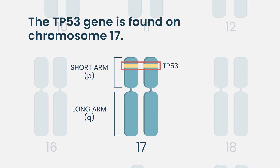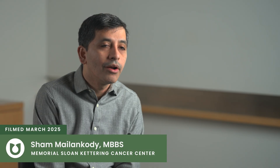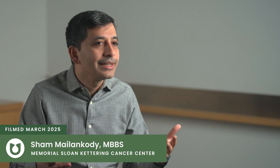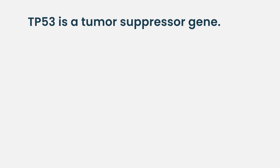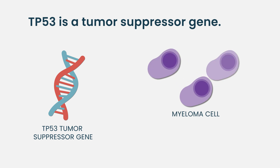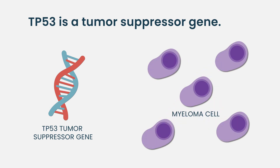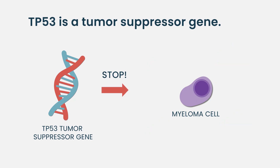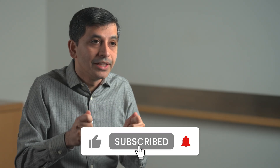P53 is one of the genes canonically recognized as important for cancer. It's a tumor suppressor gene, so its normal function is to ensure that if there are any errors in a cell's replication, P53 recognizes them and stops those cells from developing or corrects those mistakes. It's considered a master regulator for normal cells.